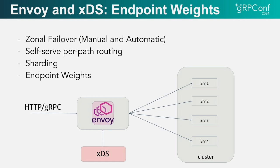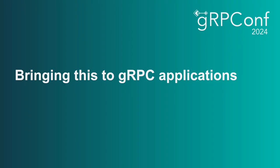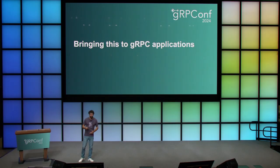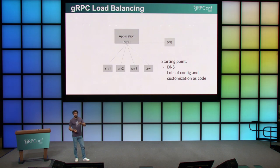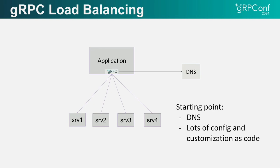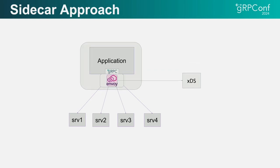The common theme for all of these features is that they require changes in configuration at runtime, so you definitely need some form of control plane for this. Envoy is not the only place where we do load balancing in our infrastructure. In fact, we have a lot of gRPC applications and they form the majority of places where service-to-service communication occurs. Our starting point was using DNS for service discovery, with a lot of code and configuration bundled directly in applications.